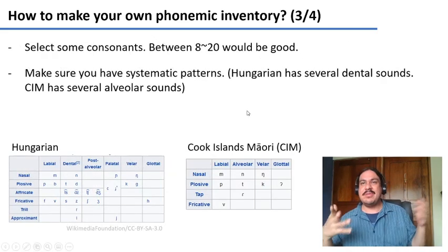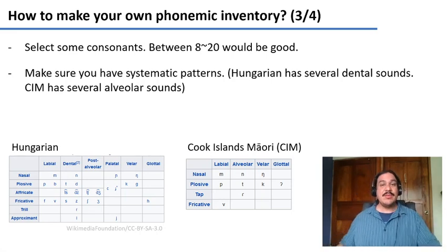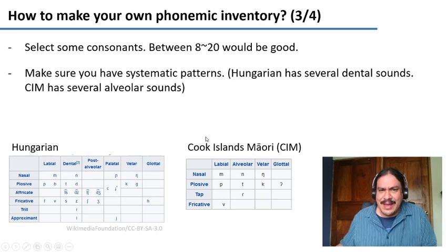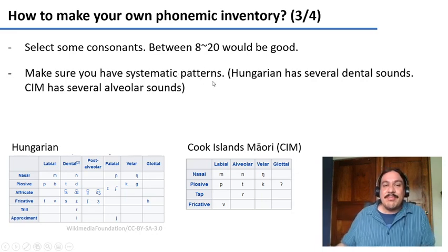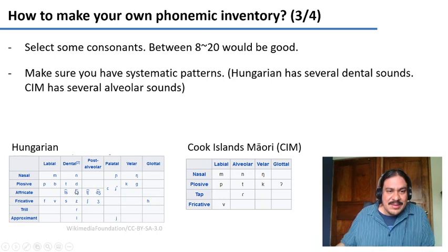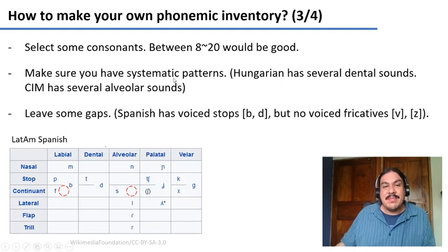Take a look at the vowels and try to come up with a few — three to fifteen vowels, distributed equally across the space. Then try to come up with some consonants; maybe between eight and twenty would be good. Cook Islands Maori has nine, so that's like the minimum. Hungarian has twenty-something. Make sure you have patterns — for example, Hungarian has several dental sounds, and even Cook Islands Maori has three alveolars. Try to have systematic patterns, but also leave some gaps, because natural languages have gaps.